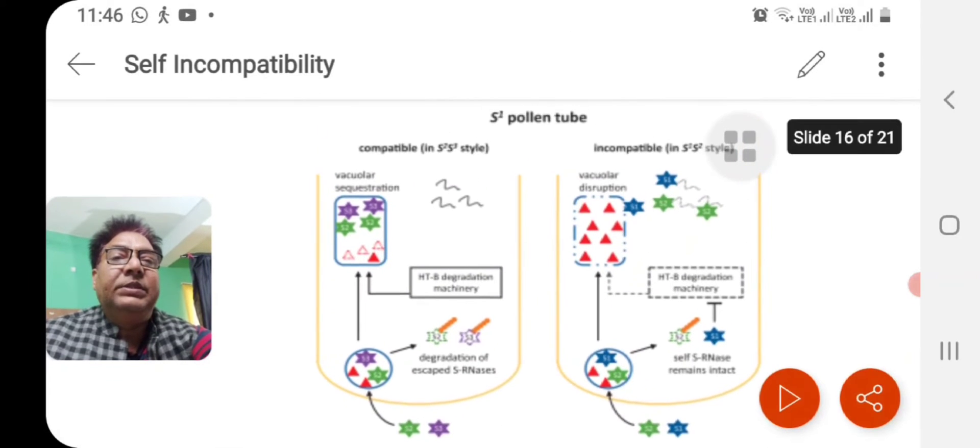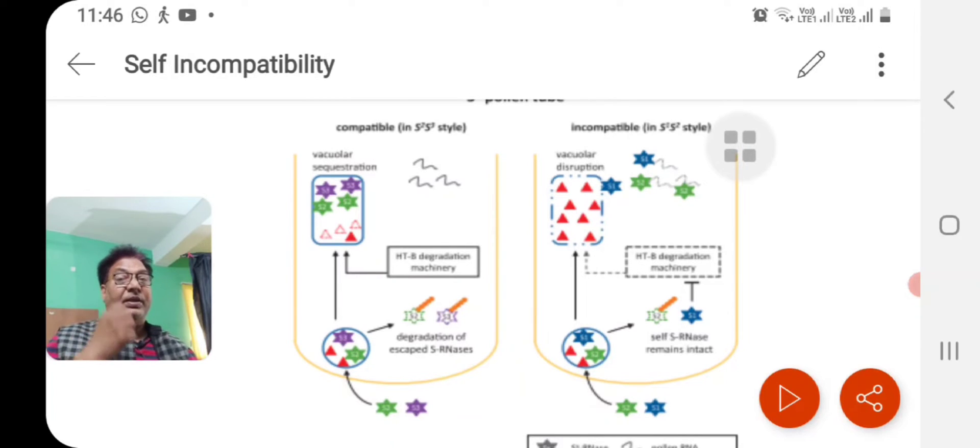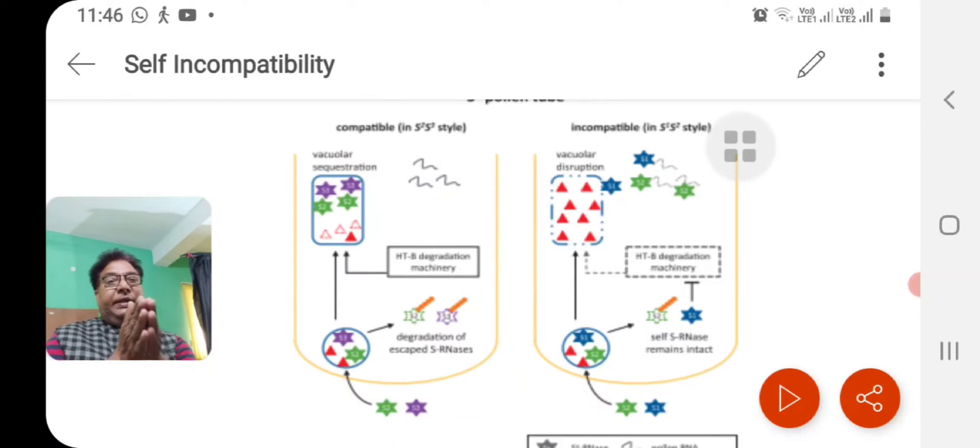In another case, there is compartmentalization process. It has been found in Pyrus and Malus species. In case of compatible pollen tubes, the sRNAs enter and are endocytosed into the pollen tube. With the help of Golgi vesicles, it is transported to the vacuoles of the pollen tube where it is stored. And there is another protein called STB protein which can degrade the vacuolar wall by a mechanism.